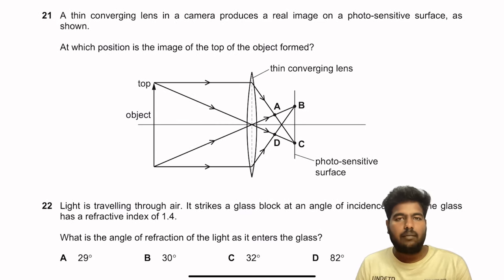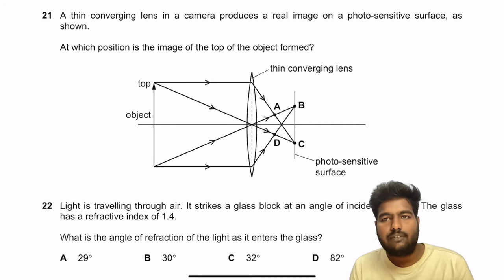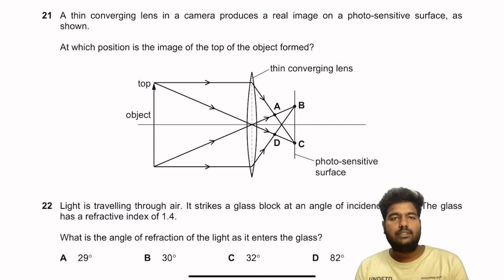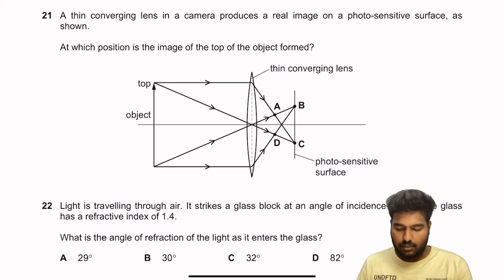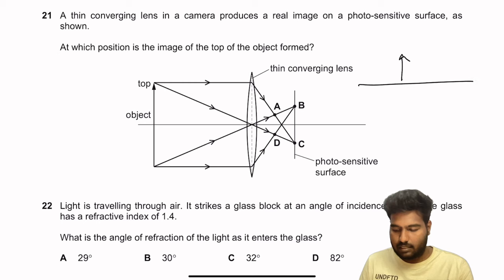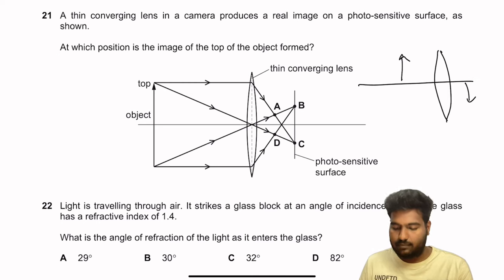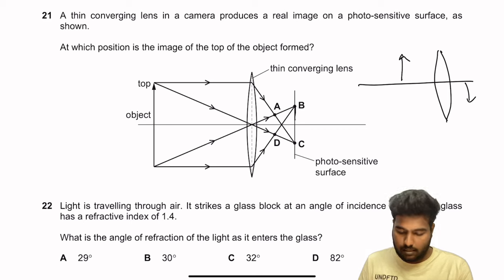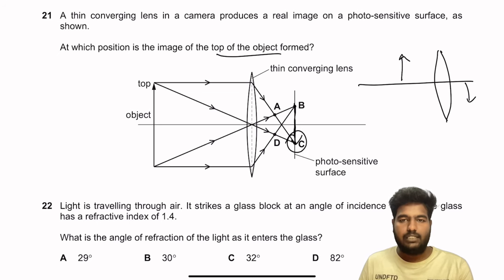Question 21: A thin converging lens in a camera produces a real image on a photosensitive surface. The image is inverted. For the top of the object, the corresponding image point forms below the principal axis on the opposite side of the lens. So the top of the image forms at position C. C is the right answer.